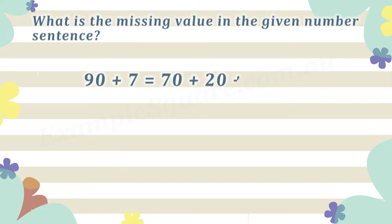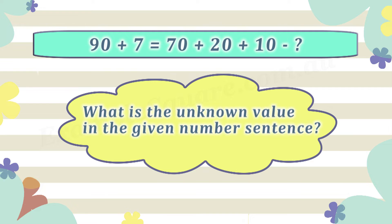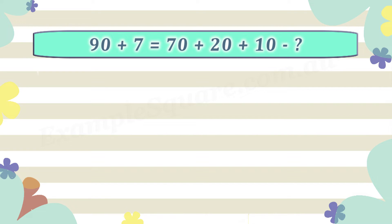What is the unknown value in the given number sentence? In this question, a number sentence is given with one of the values unknown and labeled with a question mark. The given number sentence says that 90 plus 7 on the left side is equal to 70 plus 20 plus 10 minus the unknown value on the right side.